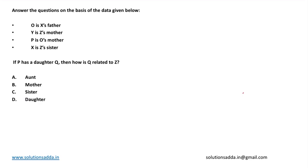This is an aptitude question based on blood relations. Answer the questions on the basis of the data given below. O is X's father - suppose X is a person and O is there, so O is X's father.